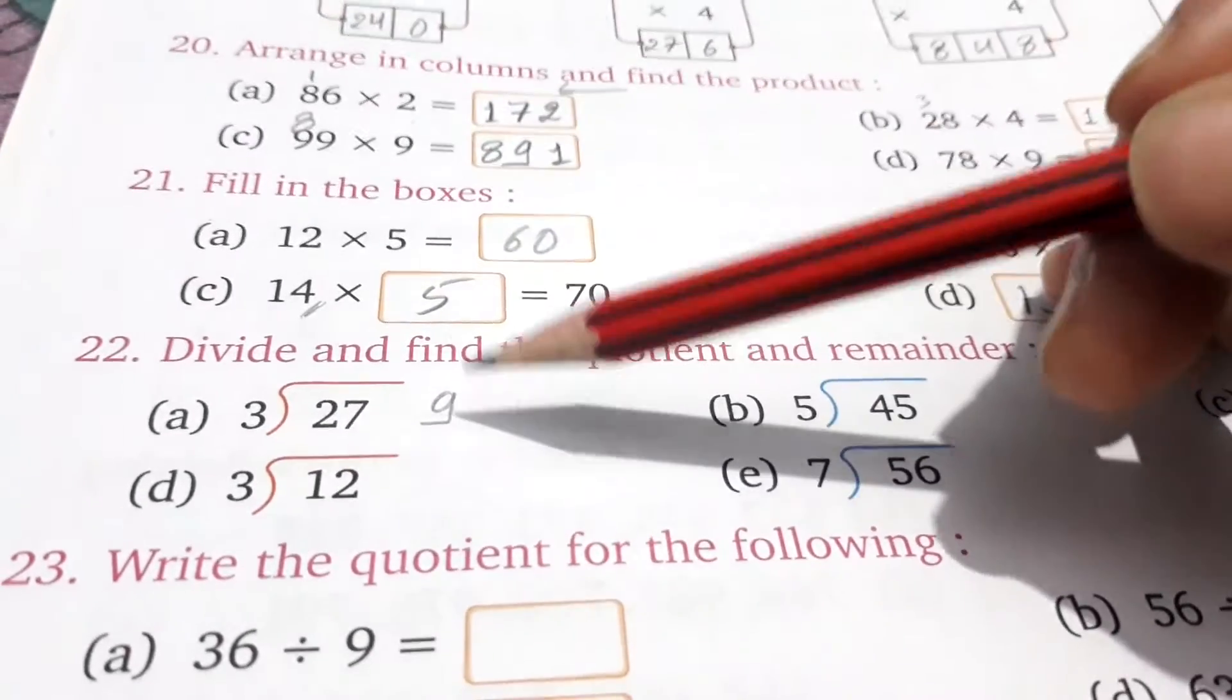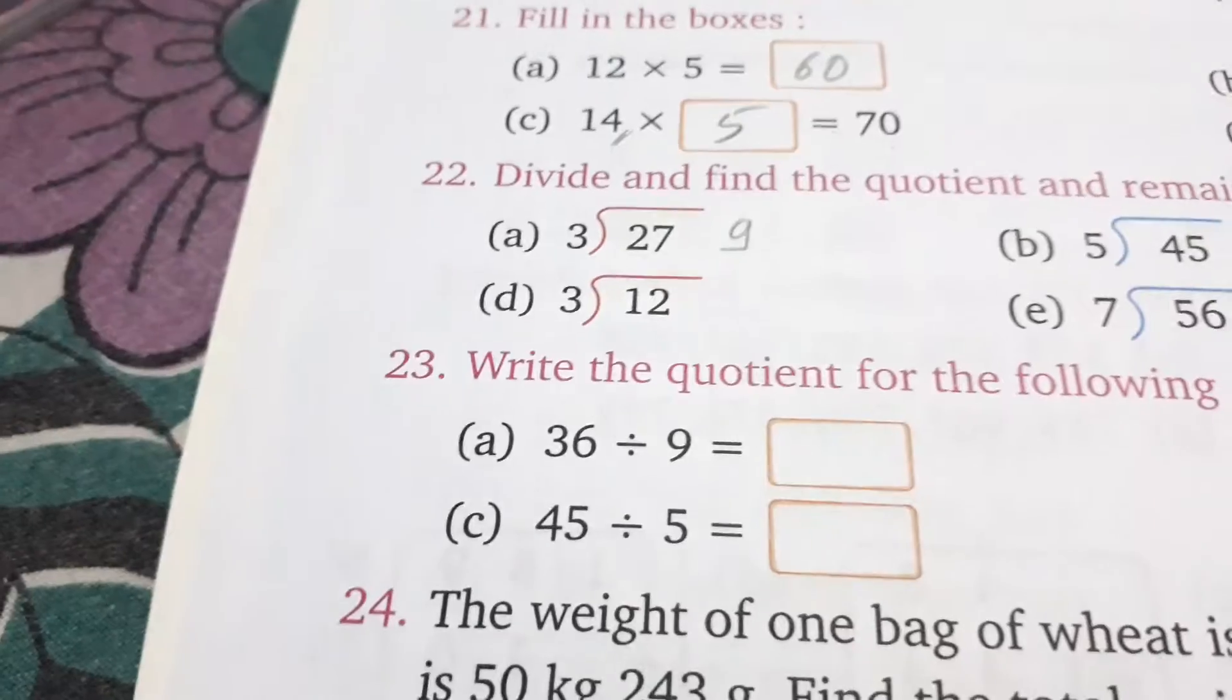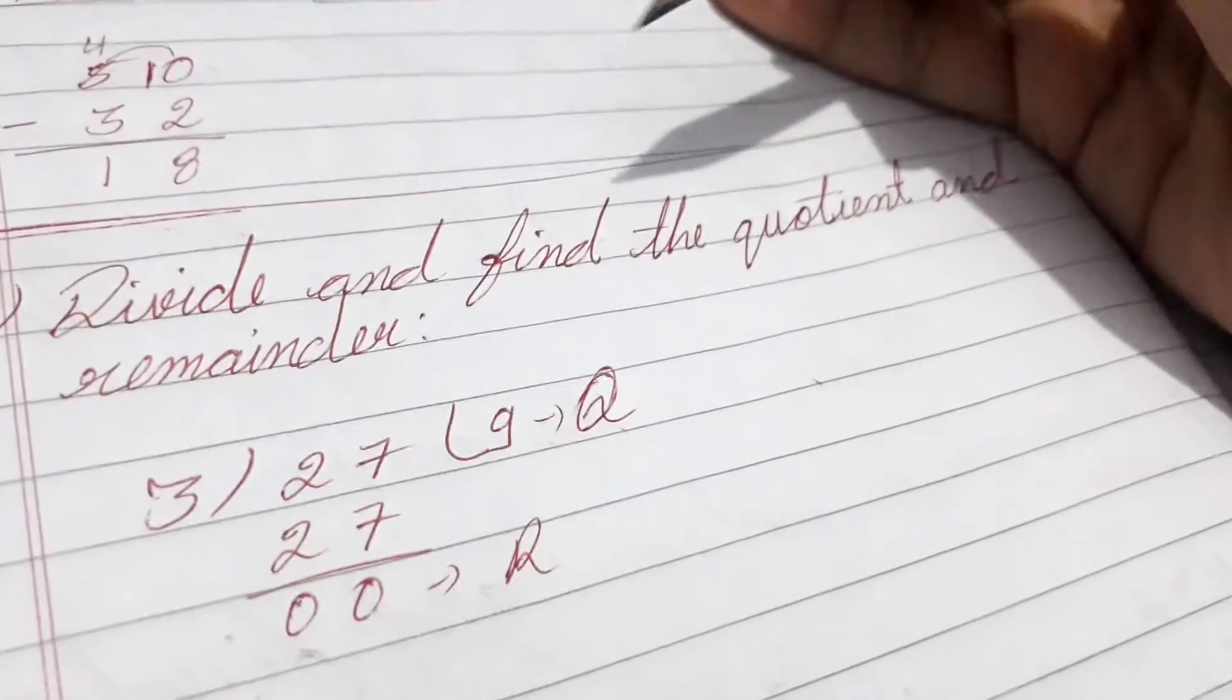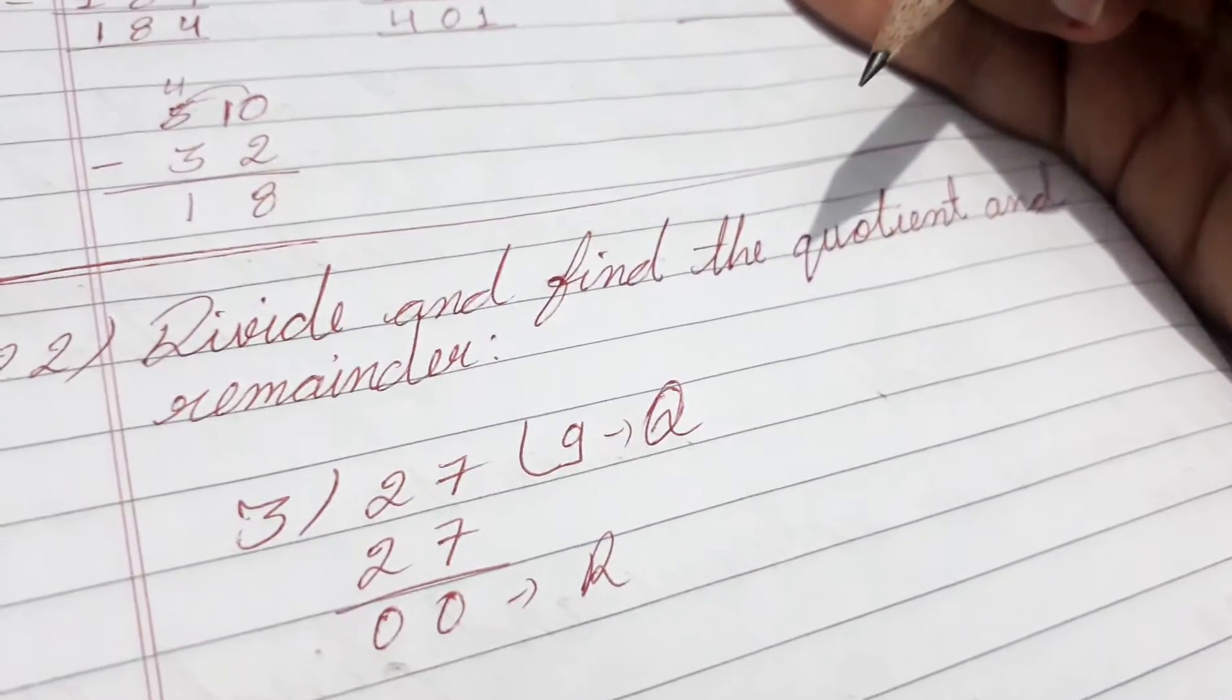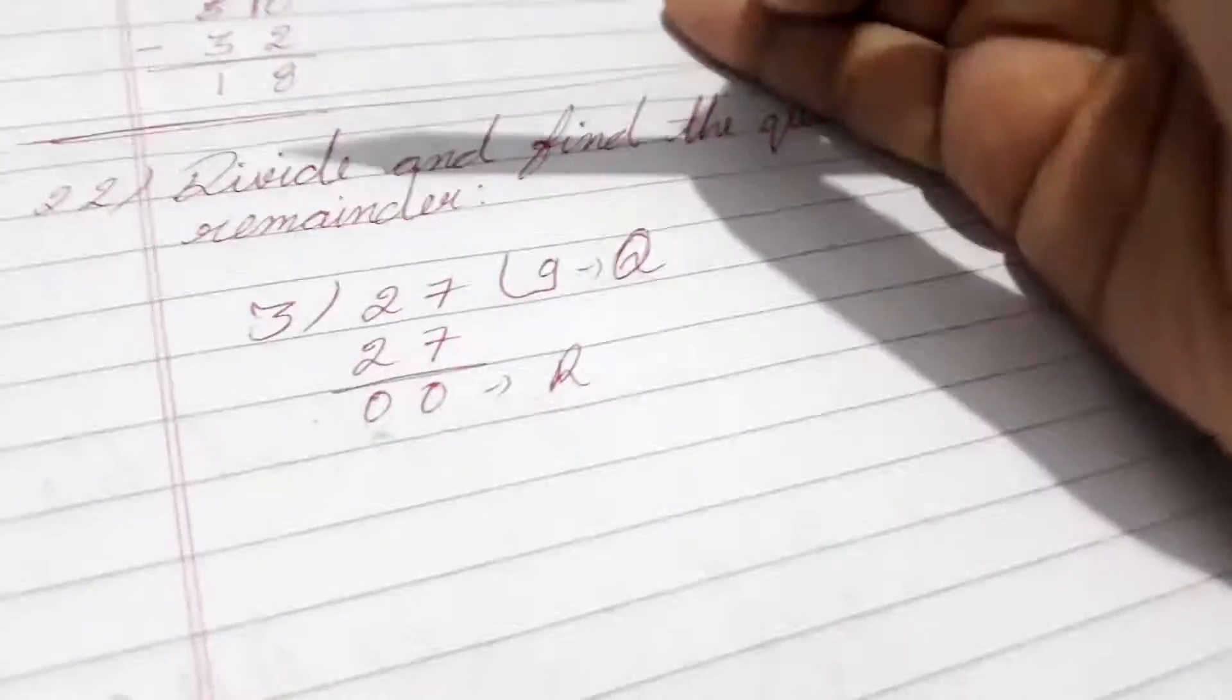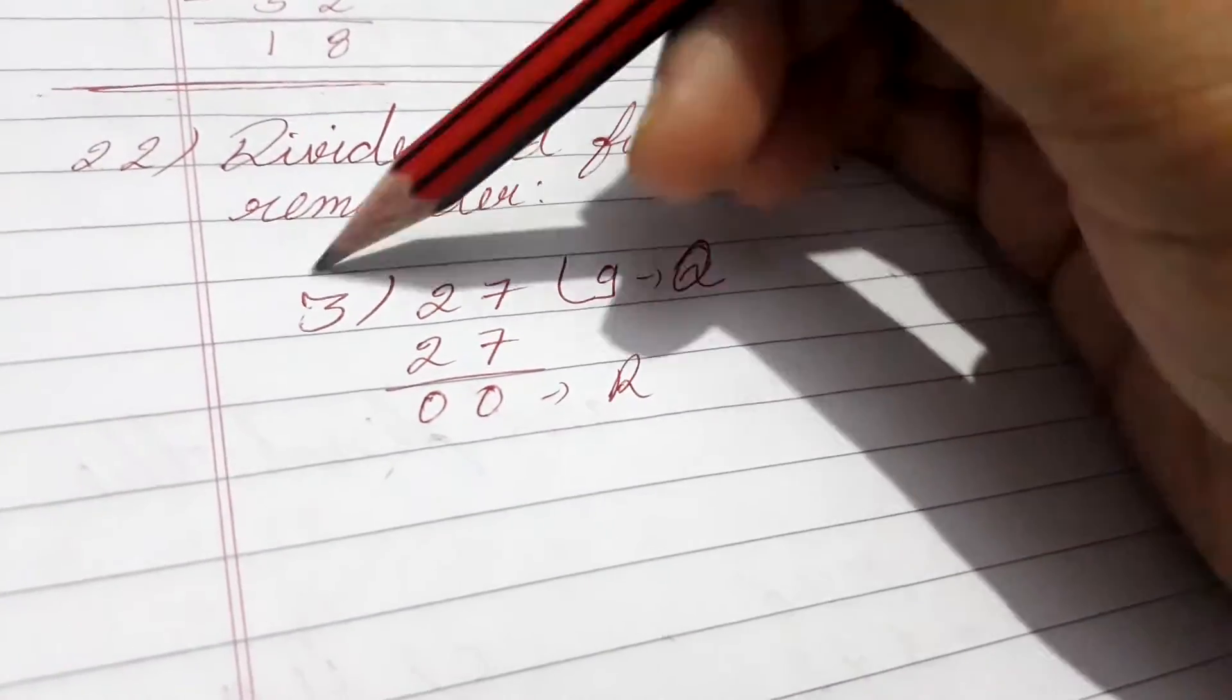Just don't write as the same, just write in your notebook. So, just first you mention section 22, that is 22, right? So, and after that complete, divide and find the quotient and reminder. Okay, just write down 3 divided by 27. 27 divided by 3, sorry.